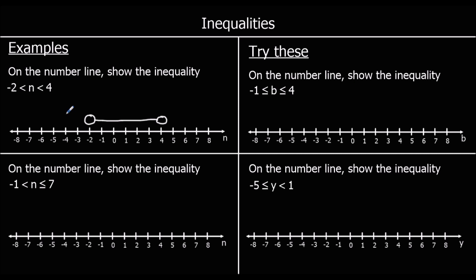The second example: on the number line, show the inequality n is bigger than minus 1 but less than or equal to 7. So bigger than minus 1 — that's an open circle. And it's less than or equal to 7 — so we colour that in to show it can equal 7. And we join them up.